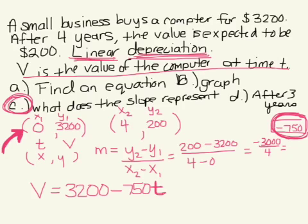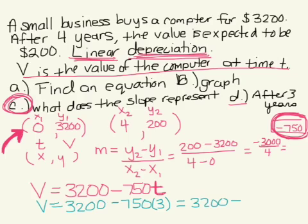Part D says after three years, how much is our computer worth? So we use our formula and our time is now three years, so you have 3200 minus 750 times 3. After three years, our computer is worth $950. Makes sense because the next year is going to decrease by $750, and that's why four years later it's worth $200.